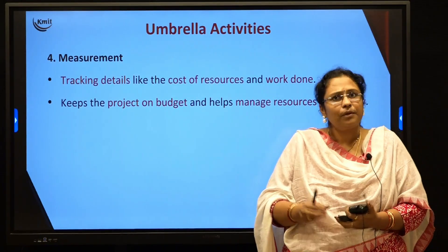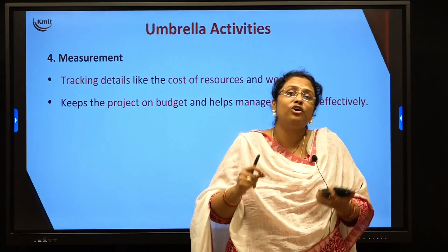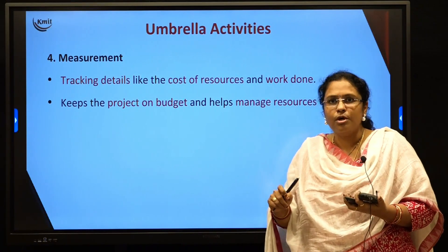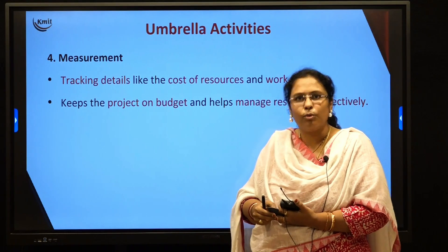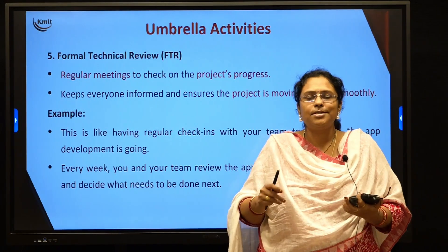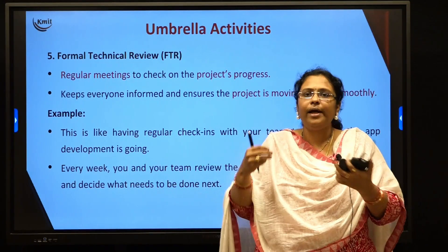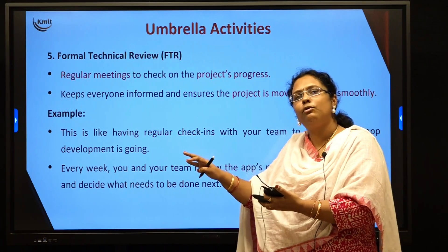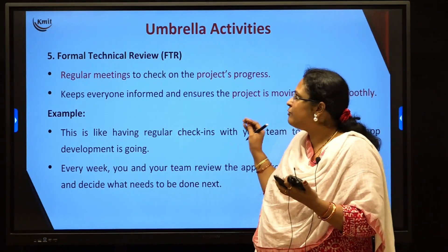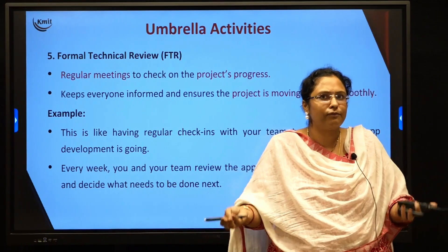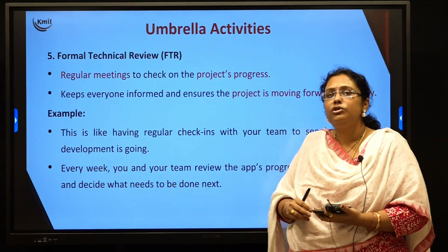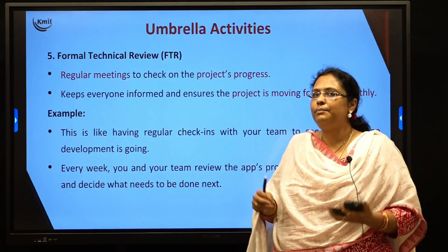The next umbrella activity is measurement — tracking the budget of your project in terms of time, people, and resources. The last one is formal technical review — conducting regular meetings with your teams, collecting feedback, and making sure all progress is happening in the given sequence of time and proper procedure. By following all these umbrella activities in the background of your software development, you will be able to achieve a reliable and quality software. This is all about your software process framework.